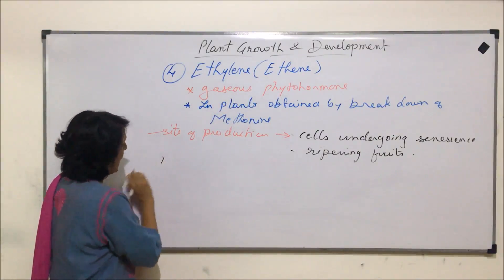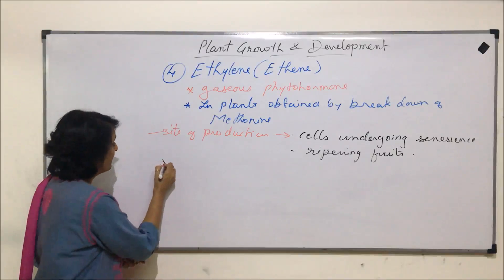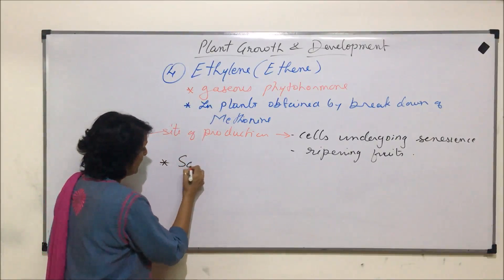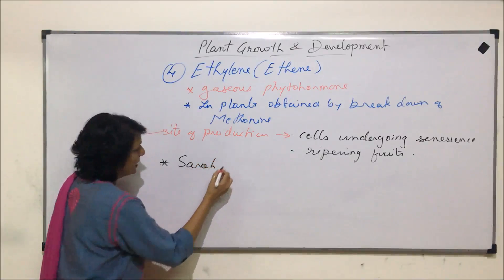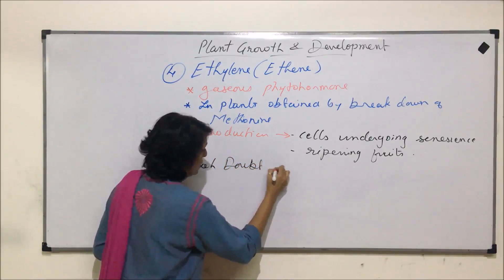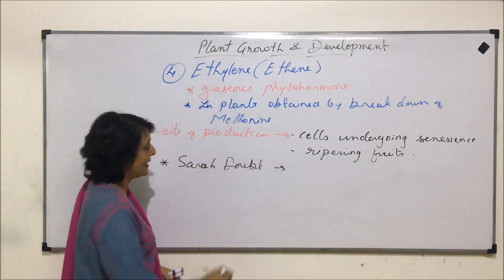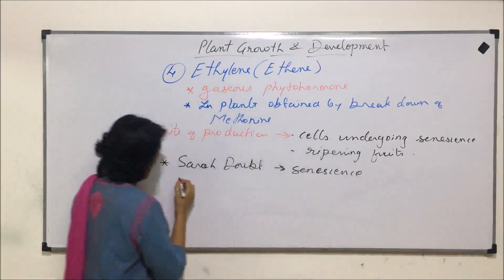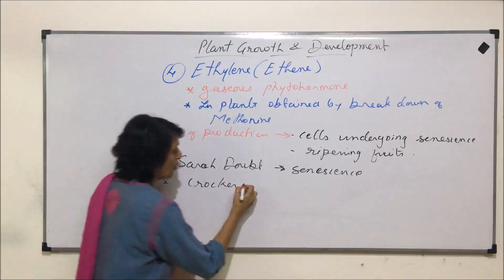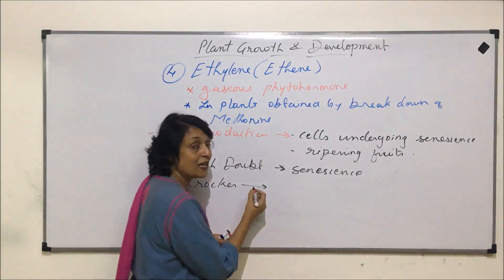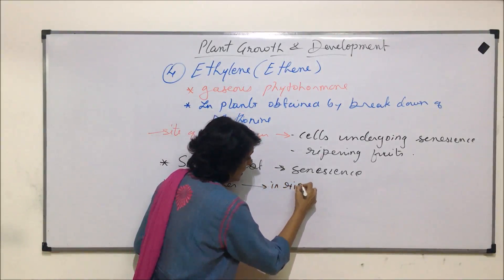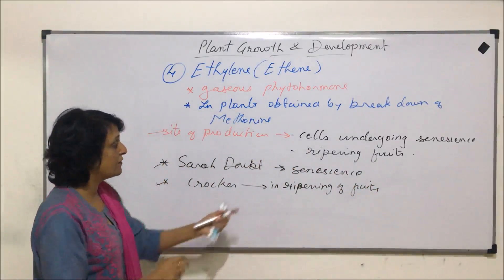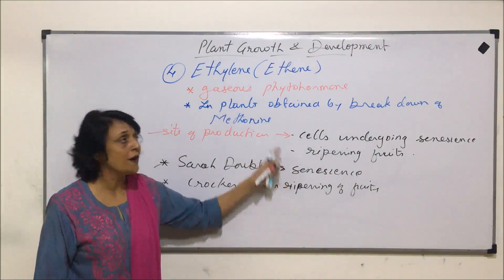Now let us talk about the functions of ethylene, and before that, two scientists who identified specific functions. One was Sarah Doubt, who showed the role of ethylene in senescence. Another was Crocker, who showed the role of ethylene in the ripening of fruits.